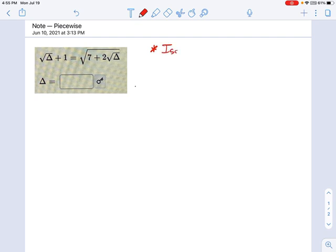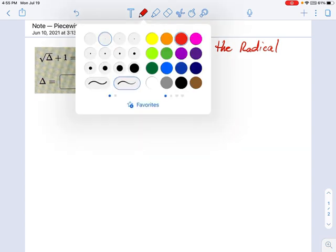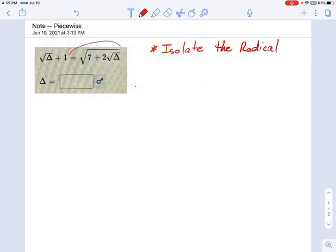Remember what we have to do first. First step is isolate the radical. That's always what we're trying to do first. Once we have the radical isolated, we can simplify things by getting rid of it. The question becomes in this one, which radical do we isolate? Do we isolate this big radical over here, or do we isolate this big radical or this teeny little radical over here?